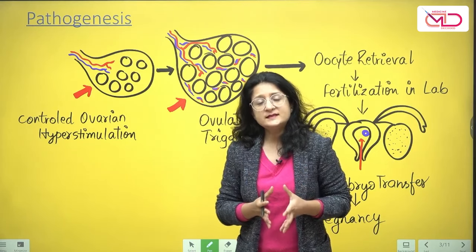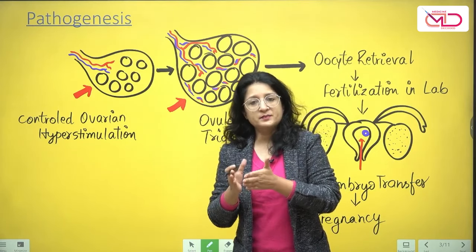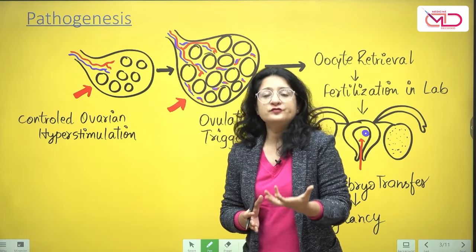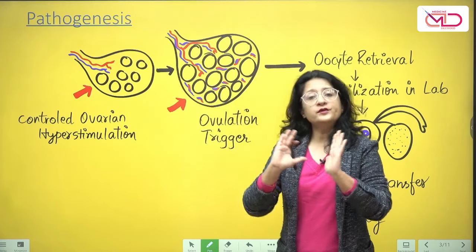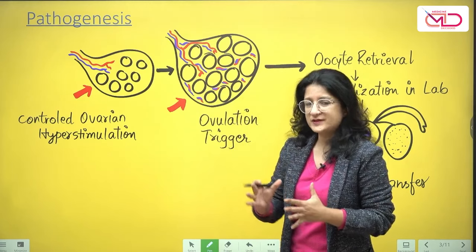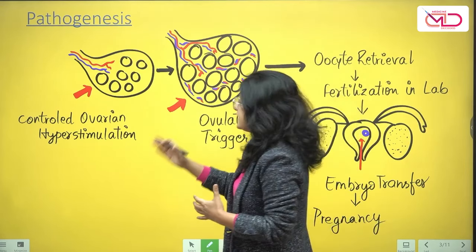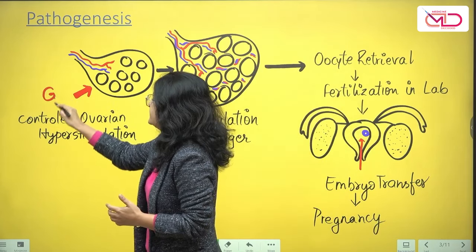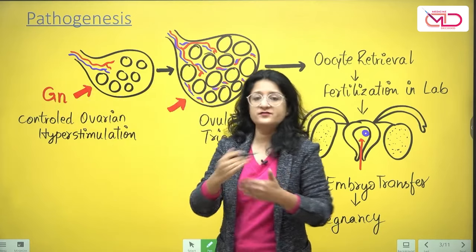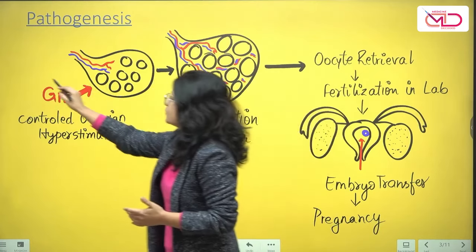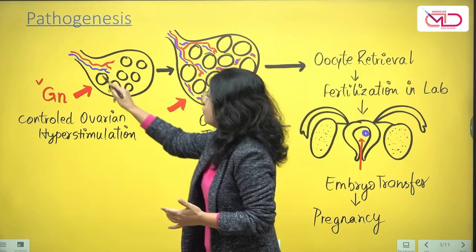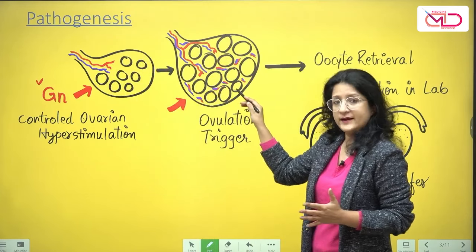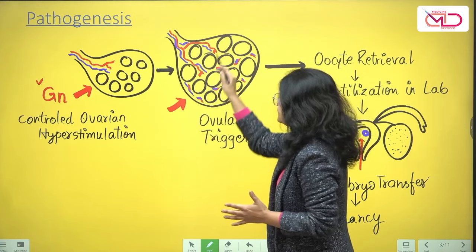Before discussing the pathogenesis of OHSS, it's important to understand what is done in an IVF cycle. In controlled ovarian hyperstimulation, gonadotropins and GnRH analogues are used to stimulate the ovaries. The goal is to achieve multiple follicles growing — that is controlled ovarian hyperstimulation.